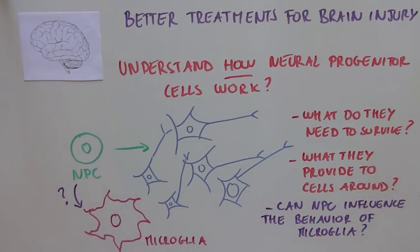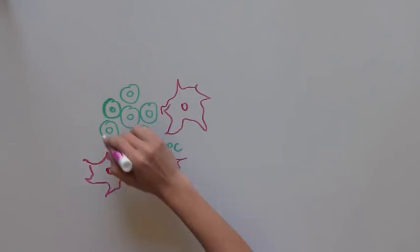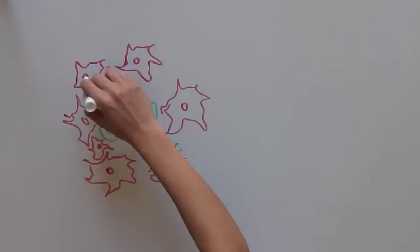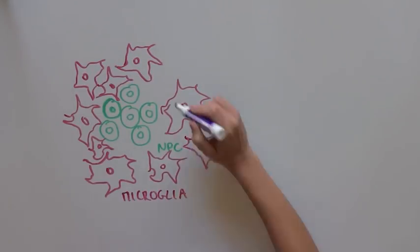First, the scientists noticed that microglia were abundant near pools of NPCs. This provided a first clue that there could be an important interaction between these two cell types.